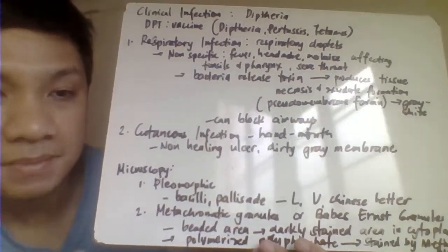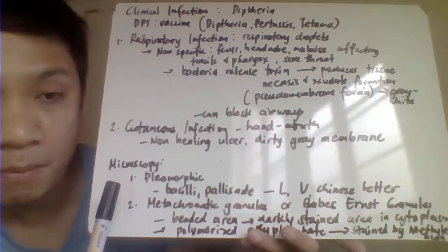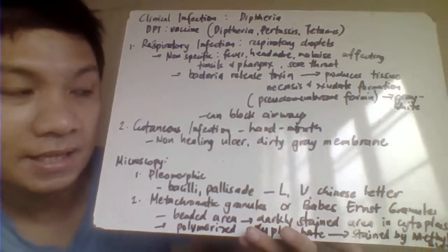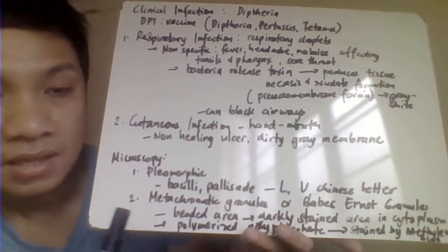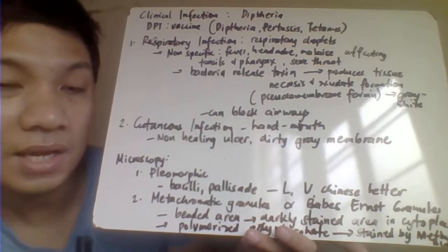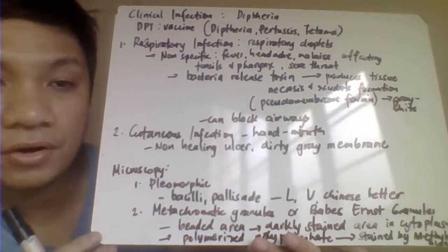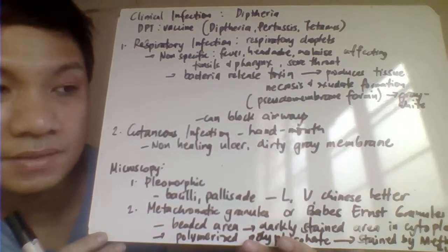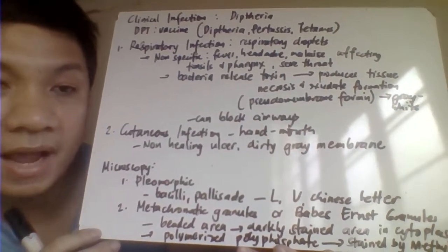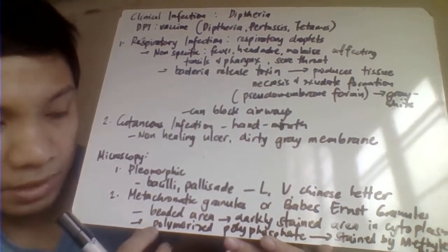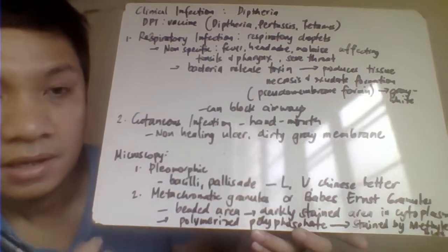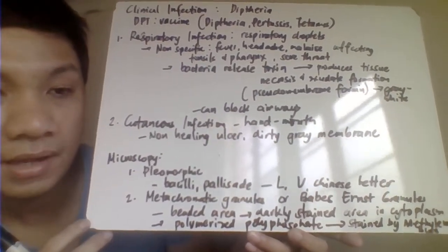For lab results, the gram stain shows pleomorphic, club-shaped bacilli arranged in palisade or L-form or V-shape — the characteristic Chinese letter arrangement. Another feature of Corynebacterium diphtheriae is that the cytoplasm contains metachromatic granules, also called Babes-Ernst granules, made up of polymerized polyphosphate. These are stained primarily by methylene blue, giving a characteristic beaded appearance of dark-stained areas.